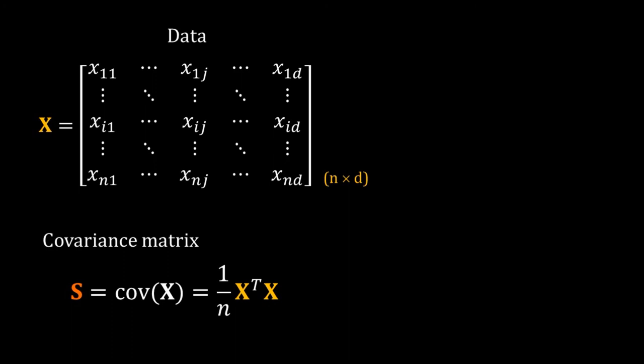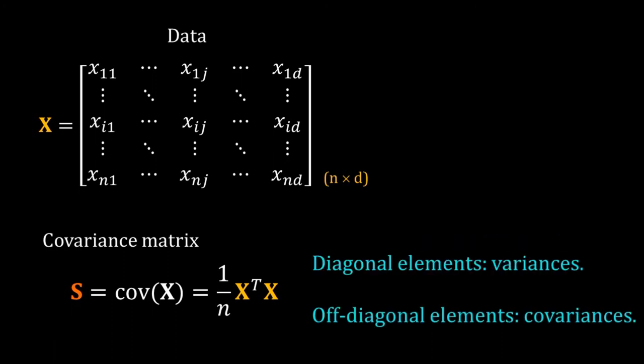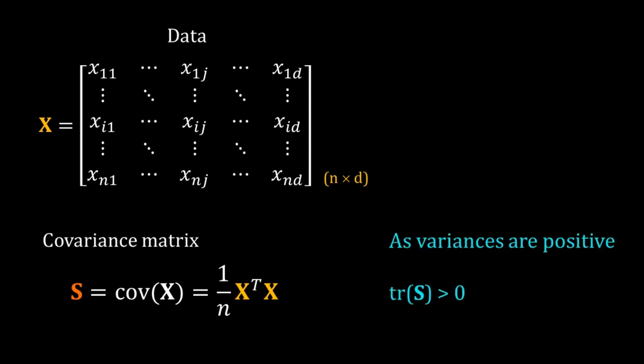Let us check some properties of the covariance matrix. It is a square matrix. Our data has d variables. So S the covariance matrix is a d by d matrix. It is also symmetric matrix. The diagonal elements of this matrix are the variances and the off diagonal elements are covariances. Now variances are always positive. So the trace of this matrix is positive.